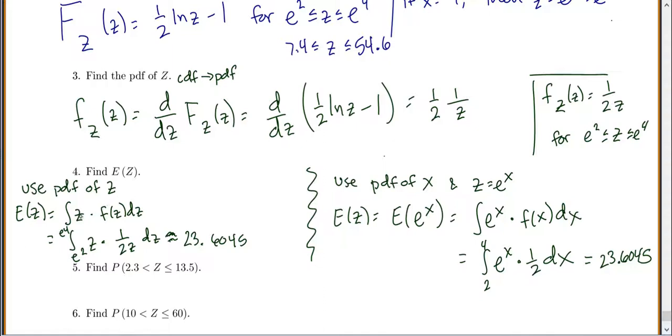So if you've already found the PDF of z, sure, find the expected value using the PDF of z. But if you haven't done it yet, save yourself some work and just say expected value of z, well that's just expected value of e to the x, and so you just say e to the x times the PDF of x to find your expected value.